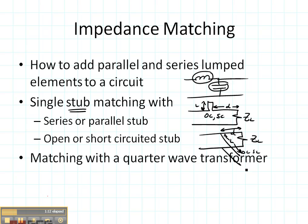The steps to do this, if you recall, are to normalize ZL and plot it on the Smith chart. Rotate a distance D until you get to the matching circle, then read off the imaginary value. Plot the negative of the imaginary value, because that's what you want the input of the stub to be. Place that on the Smith chart and rotate a distance L until you get to the load of your stub.